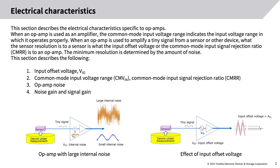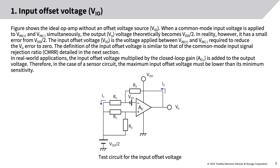Input offset voltage VIO: the figure shows the ideal op-amp without an offset voltage source VIO. When a common mode input voltage is applied to VIN+ and VIN−, the output voltage theoretically becomes VDD divided by 2. In reality, however, it has a small error from VDD divided by 2.